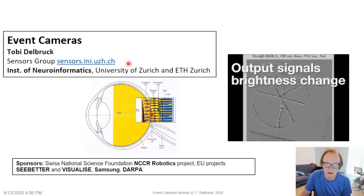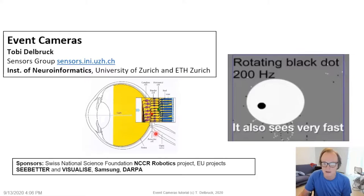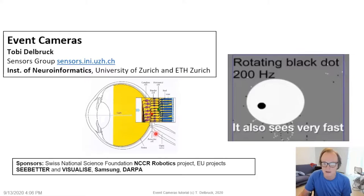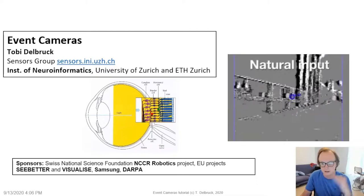Hello everybody, my name is Toby Delbruck. I'm at the Sensors Group at the Institute of Neuroinformatics, University of Zurich and ETH Zurich. This tutorial is about event cameras — cameras that mimic the spiking output of the eye, outputting brightness changes and somehow mimicking a simplified functionality of the real retina. This is a very long tutorial, so I don't expect anybody to watch it in one sitting. I recommend looking at it piece by piece using the YouTube index to jump around.